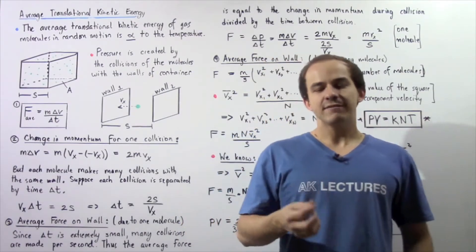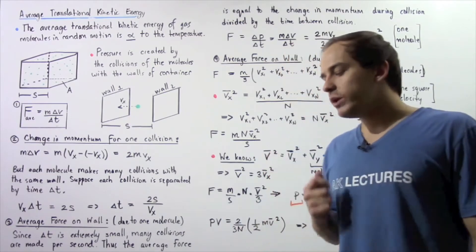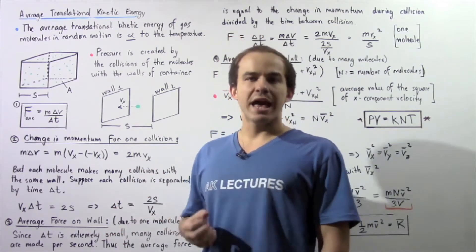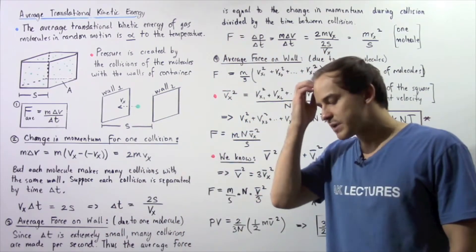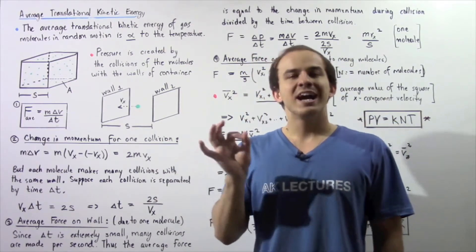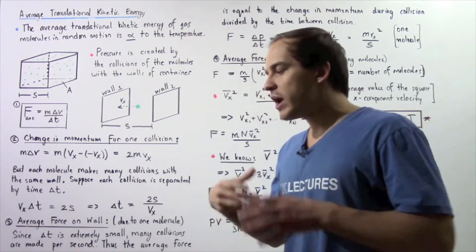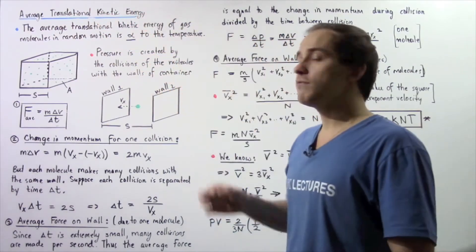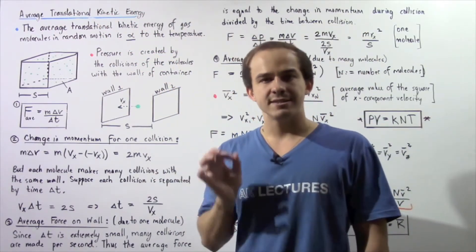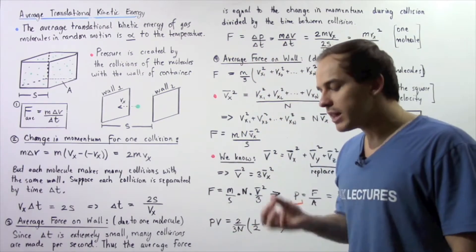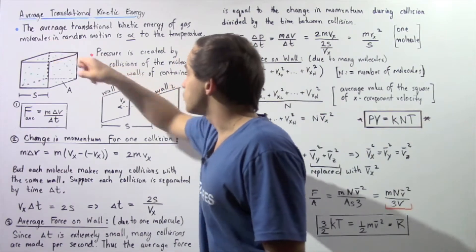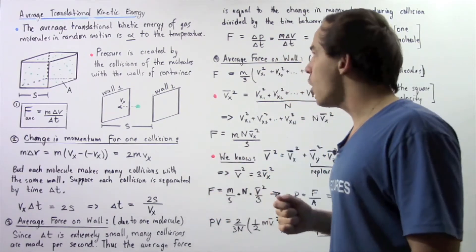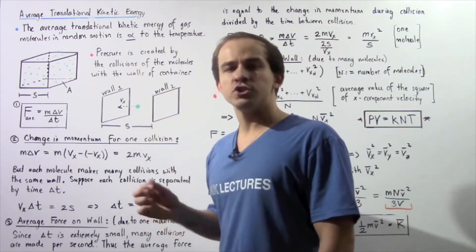In the previous lecture, we discussed the average kinetic theory of gases. We said that this is an important theory because it essentially helps us describe the way that our ideal and real gases behave. Now in this lecture, we're going to use the kinetic molecular theory of gases to help us develop a relationship between the average translational kinetic energy of the gas molecules and the temperature of our gaseous system. According to the kinetic molecular theory of gases, the average translational kinetic energy of the ideal gas molecules in random and arbitrary motion is directly proportional to the temperature.